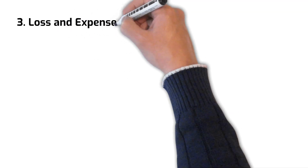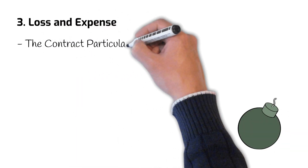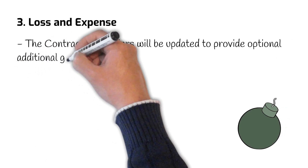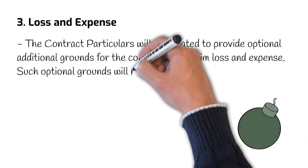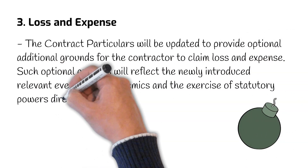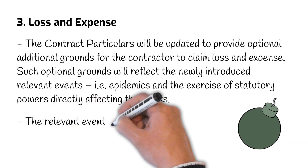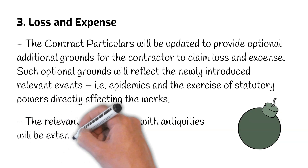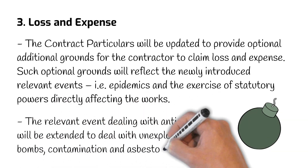Number 3: Loss and Expense. It has been reported that the contract particulars will be updated to provide optional additional grounds for the contractor to claim loss and expense. Such optional grounds will reflect the newly introduced relevant events, i.e. epidemics and the exercise of statutory powers directly affecting the work. It is also reported that the relevant event dealing with antiquities will be extended to deal with unexploded bombs, contamination, and asbestos.